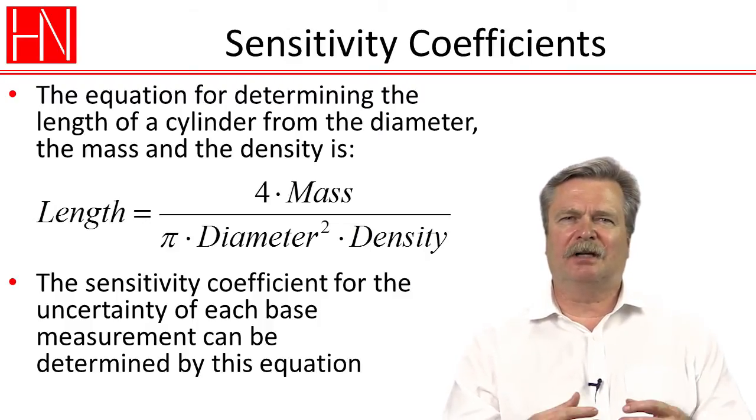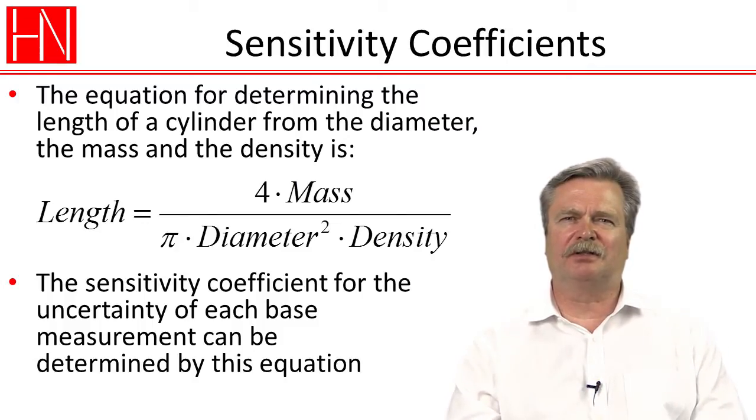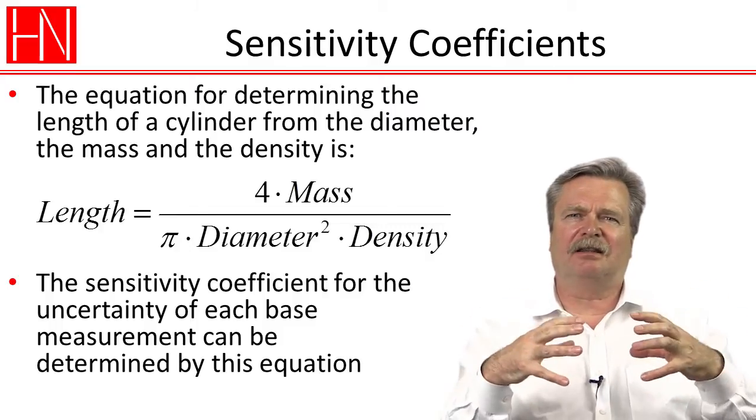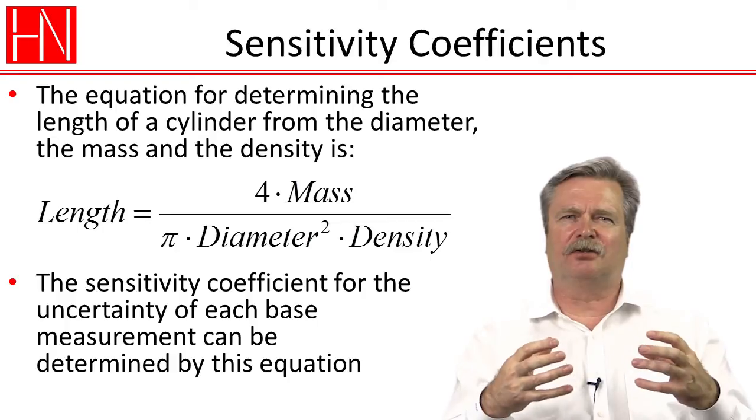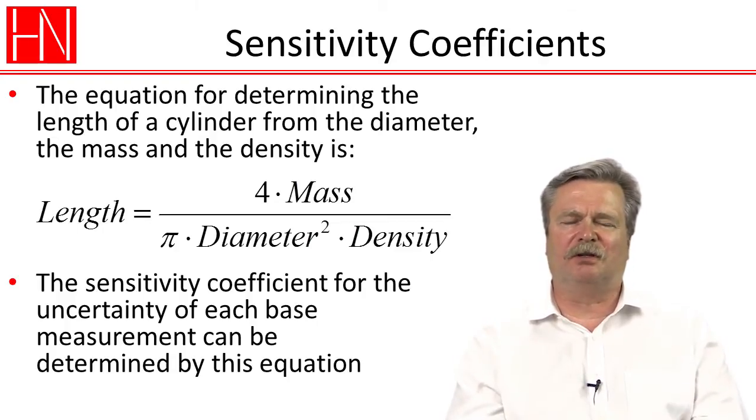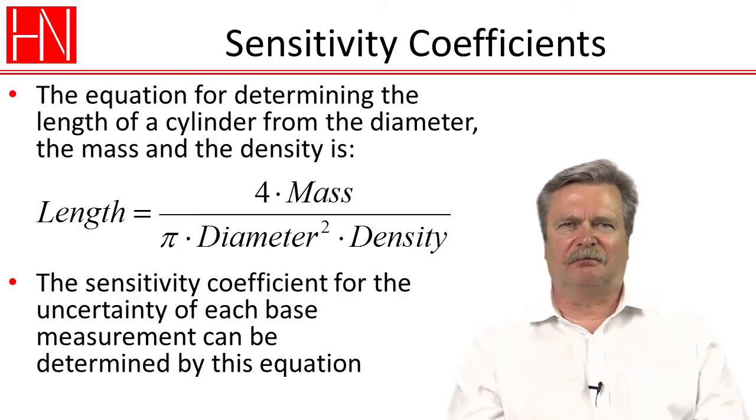Looking at if we made those three separate measurements and we put together an uncertainty budget for each of those measurements, how do we then add them together to get the overall uncertainty of our length determination based on those three measurements? And that's where we end up using that equation.